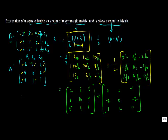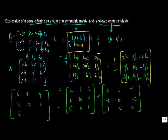Now if we take the sum of these two matrices: 2 plus 0 gives 2, 6 plus 2 gives 8, 5 minus 1 gives 4. Then 6 minus 2 gives 4, 10 plus 0 gives 10, 4 minus 2 gives 2. Then 5 plus 1 gives 6, 4 plus 2 gives 6, and 1 plus 0 gives 1.